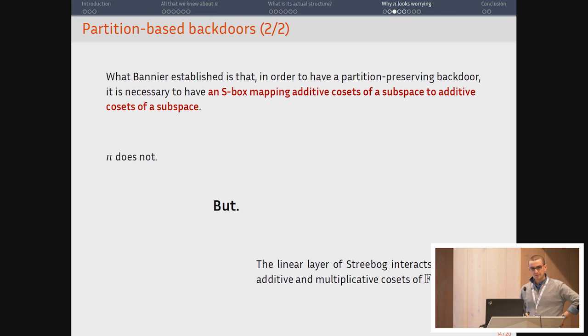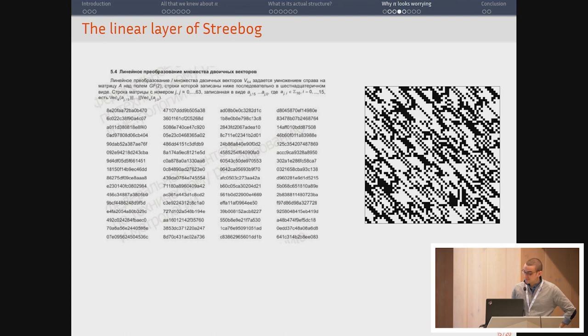But it's not that simple either. Because when you look specifically at Streebog, the linear layer interacts with both additive cosets and multiplicative cosets of the subfield. So that's something else the designers did not explain. When they designed Streebog, they have a small internal block cipher and this internal block cipher uses a mixed column-like operation. And it's specified by its binary matrix. So this is the specification. If you write the binary matrix as a picture, this is what you get. And there are some obvious patterns here. It's actually just an 8x8 matrix of the subfield. Why they didn't say so, I don't know. Because there is nothing wrong with that. What's funnier is that it's defined in the same field with the same polynomial as pi.